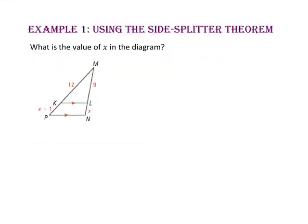In example 1, we will use the side splitter theorem to find the value of X. Since segment KL is parallel to segment PN, we know that segment KL divides the sides of the triangle into proportional segments. Let's start by writing our proportion: the length of segment PK to the length of segment KM is equal to the length of segment NL to the length of segment LM.